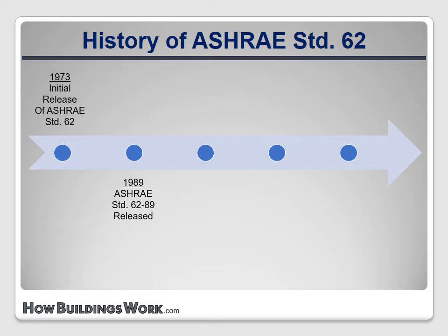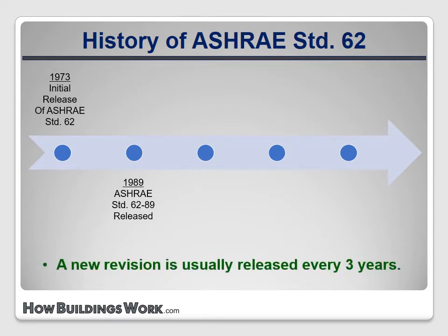Changes are handled by a volunteer committee using an open consensus-based process, and a revision to the standard is released every three years. However, ASHRAE broke that cycle in 2003, making an important change. In that year, they split Standard 62 into Standard 62.2 for low-rise residential buildings, and 62.1 for all other buildings. Then they returned to the three-year release cycle.